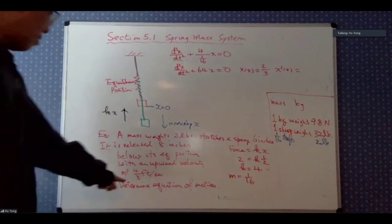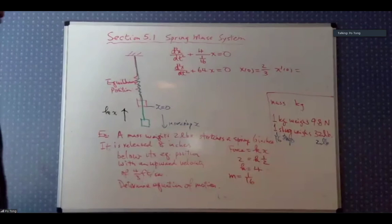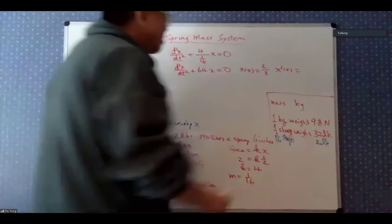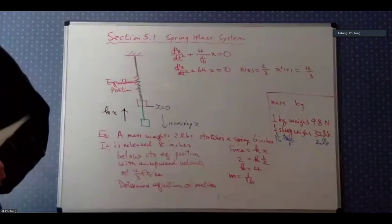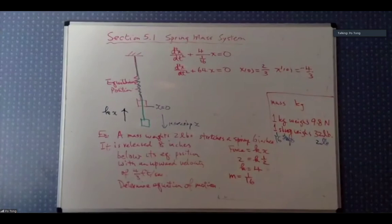X prime of zero corresponds to an upward initial velocity. So x'(0) is negative — meaning the mass is pushed upward when released.